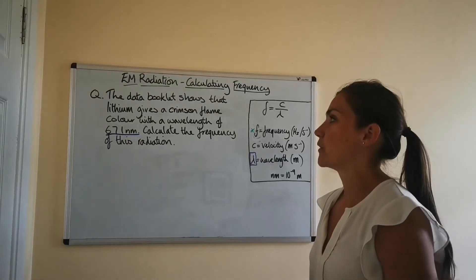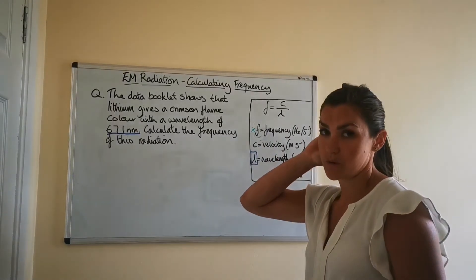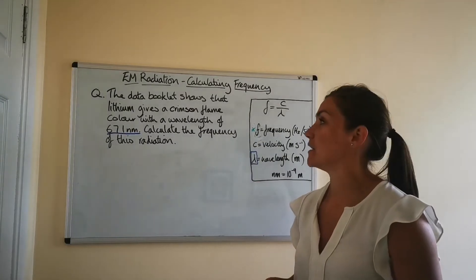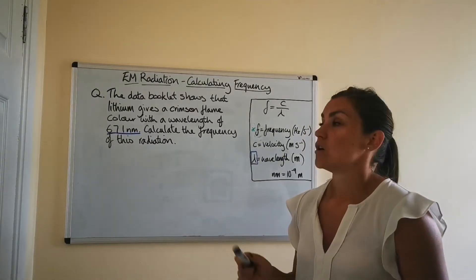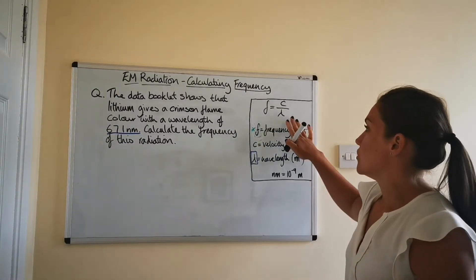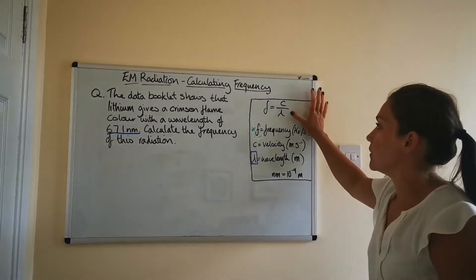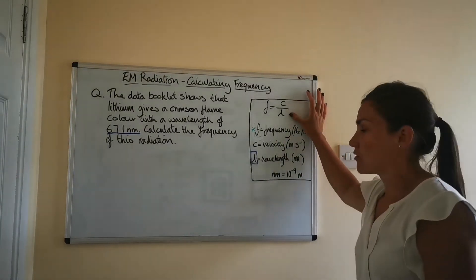In this video, we're going to look at how we calculate the frequency of light when given the wavelength. We're still using this relationship that we used when we were calculating the wavelength from the frequency.